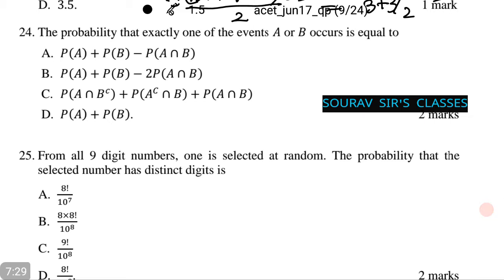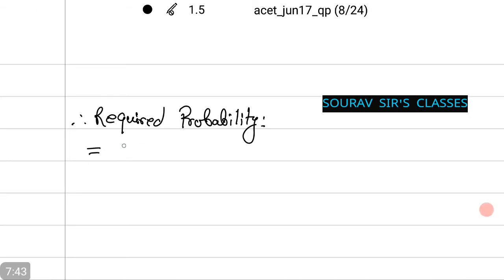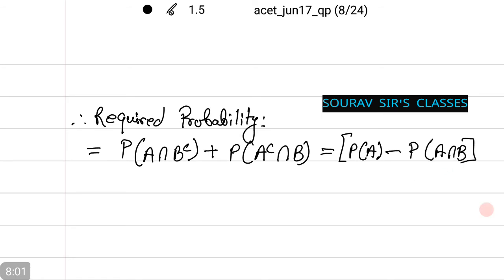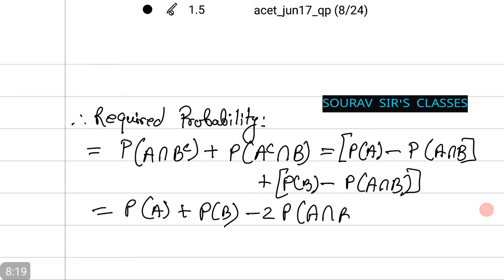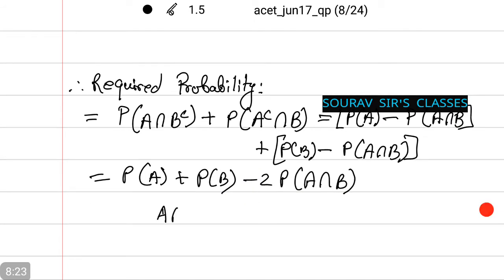Now, we have a question on probability. The probability that exactly one of the events A or B occurs is equal to among the following. Let's take out how to do this. Therefore, the required probability is equal to probability A intersection of B complement plus P A complement intersection of B equals P A minus P A intersection of B plus P B minus P A intersection of B, and this is equal to P A plus P B minus 2P A intersection of B, as A intersection B complement, A intersection B, and A complement intersection B are mutually exclusive events.